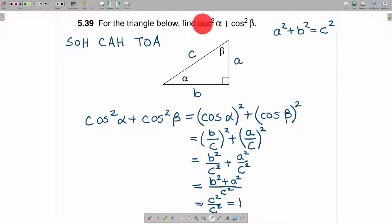To summarize, cosine squared alpha plus cosine squared beta is equal to 1.